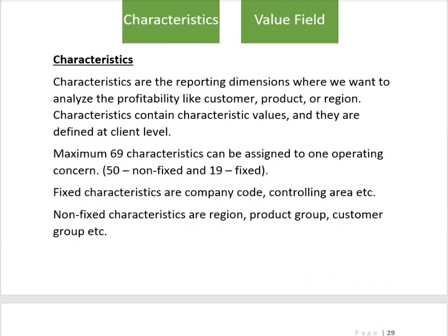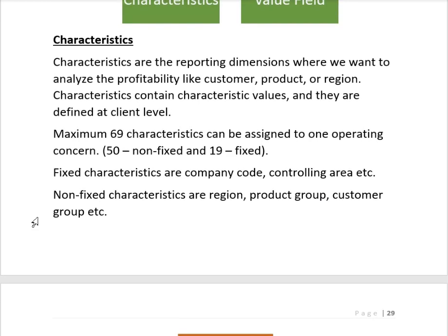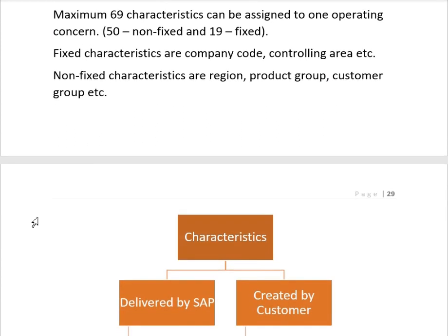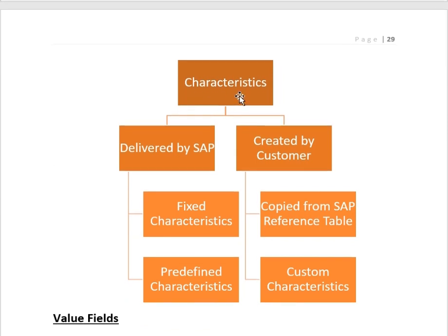A maximum of 69 characteristics can be assigned to one operating concern. Of these 69 characteristics, 50 are non-fixed and 19 are fixed. Fixed characteristics include company code and controlling area. Non-fixed characteristics include region, product group, and customer group. Characteristics are further divided into two categories: those delivered by SAP and those created by the customer.